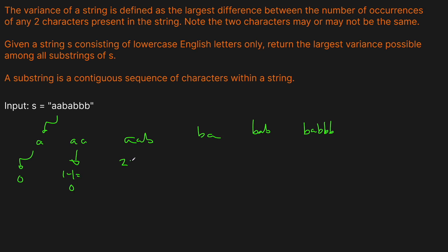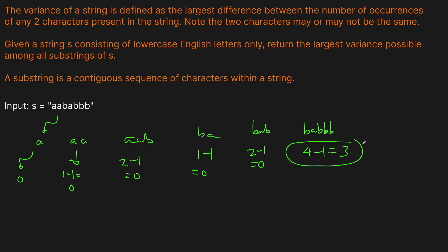For AAB, we have two minus one. For BA, this is one minus one, so zero. BAB is two minus one, so zero. Here we have four B's and one A, so the variance is three. This is actually our best solution — if you were to go through all of them, you'd find this is the one with the maximum variance.